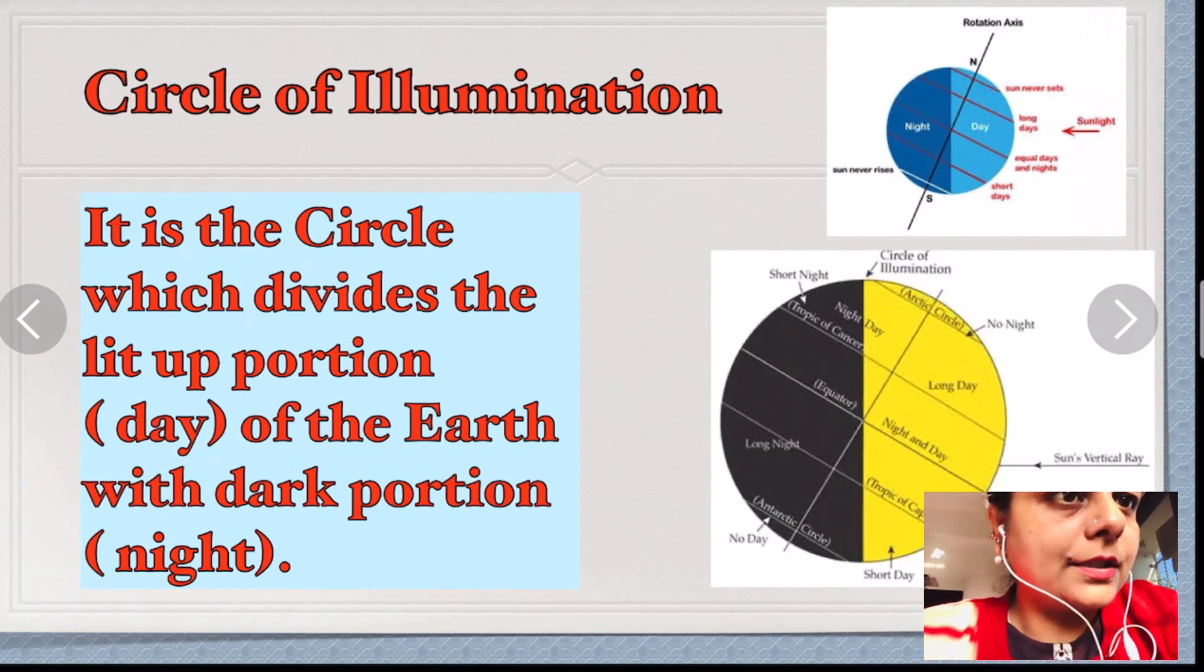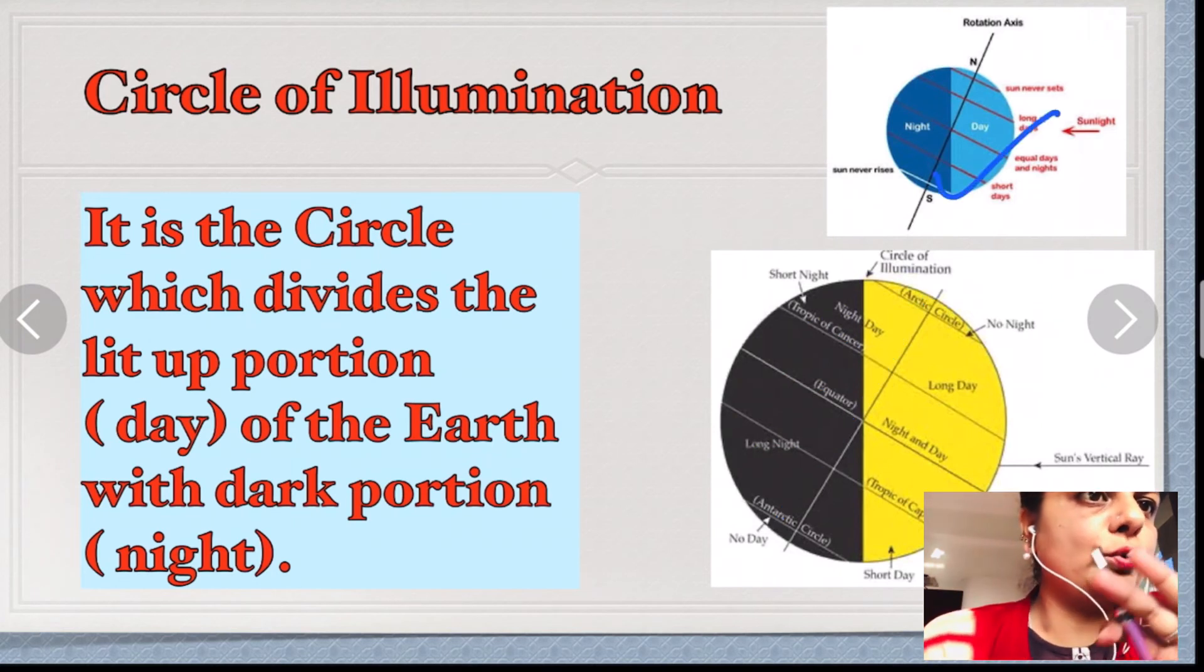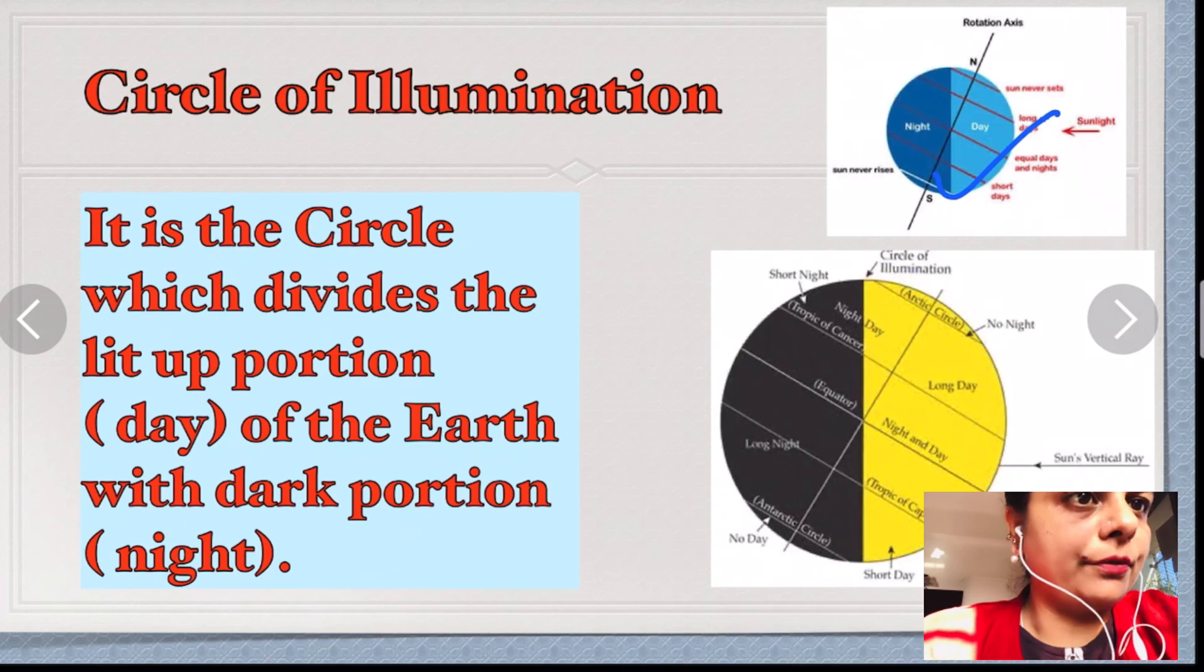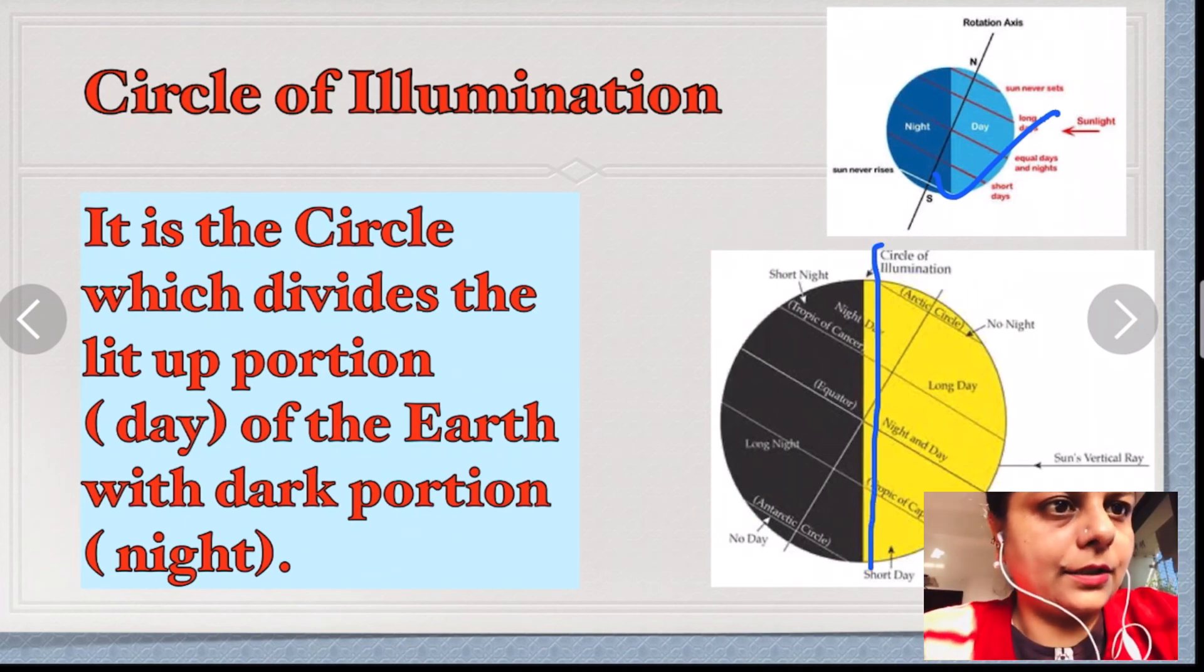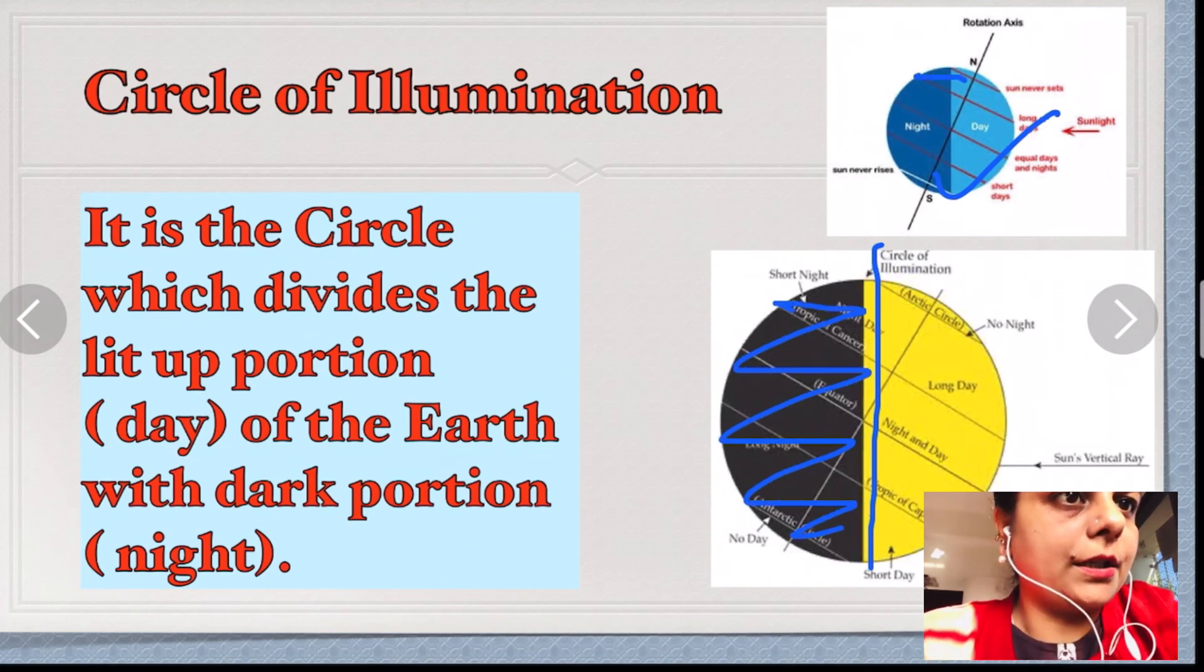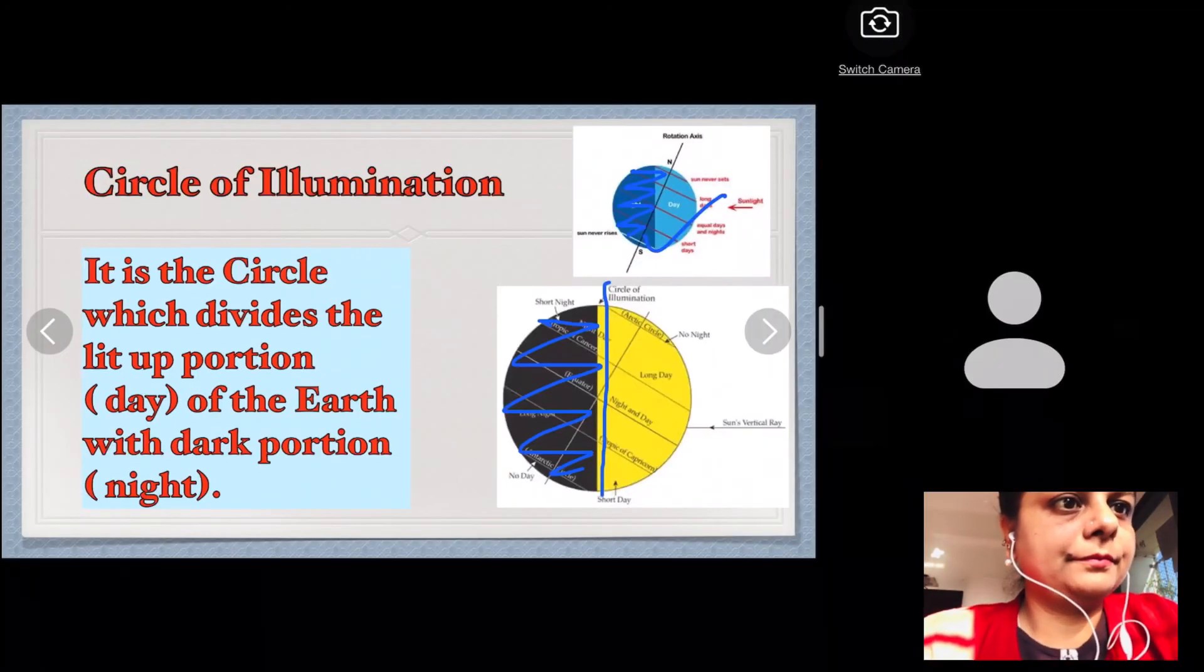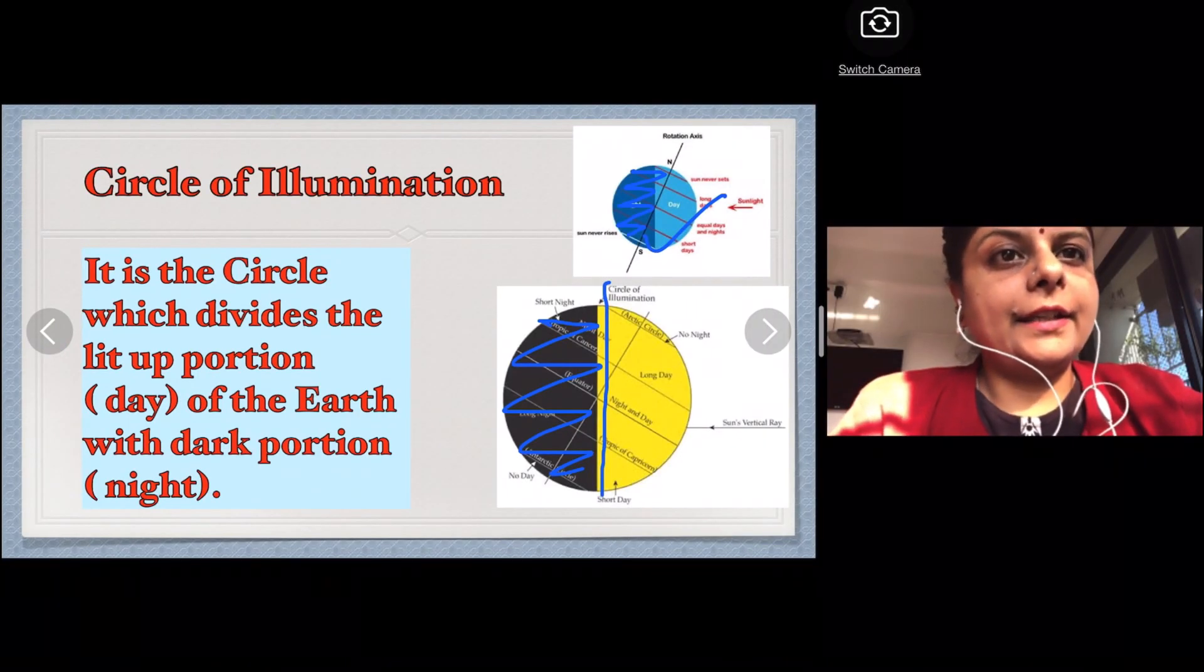This is the correct diagram of how to divide the portion of day and night. You have to draw a vertical line, that is circle of illumination, and then you have to shade the part accordingly. If you shade the part along with axis, it goes wrong. Clear. In the next video we will learn about other concepts related to rotation and revolution.